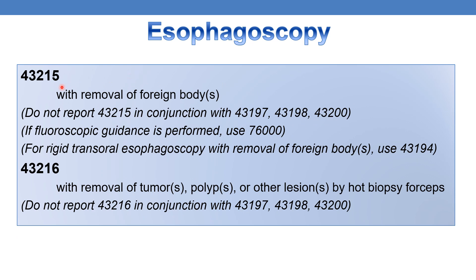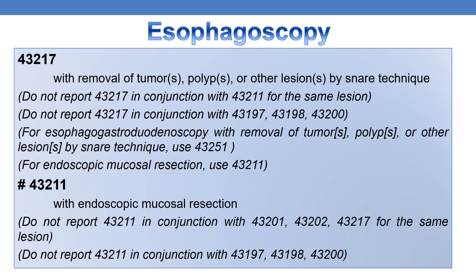CPT 43215 deals with esophagoscopy, flexible, transoral, with removal of foreign body. CPT 43216 deals with esophagoscopy, flexible, transoral, with removal of tumor, polyp, or other lesion by hot biopsy forceps. CPT 43217 deals with esophagoscopy, flexible, transoral, with removal of tumor, polyp, or other lesion by snare technique — distinguishing it from 43216 which uses hot biopsy forceps.